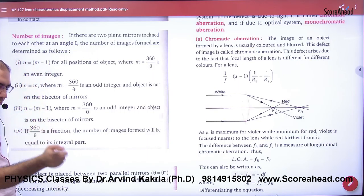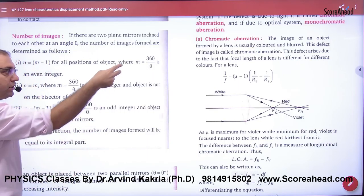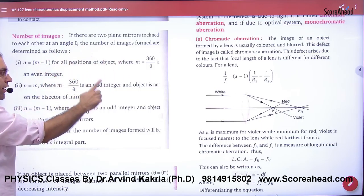But this rule will be when 360 divided by theta gives an even integer. But if it gives an odd integer and the object is not in the bisector, then the number of images will be m.